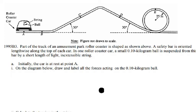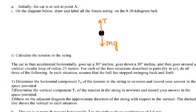For the first question, the car is initially at rest at point A. Draw and label all the forces acting on the 0.1 kilogram ball. The only forces acting on the ball are the tension force from the string and the force of gravity.